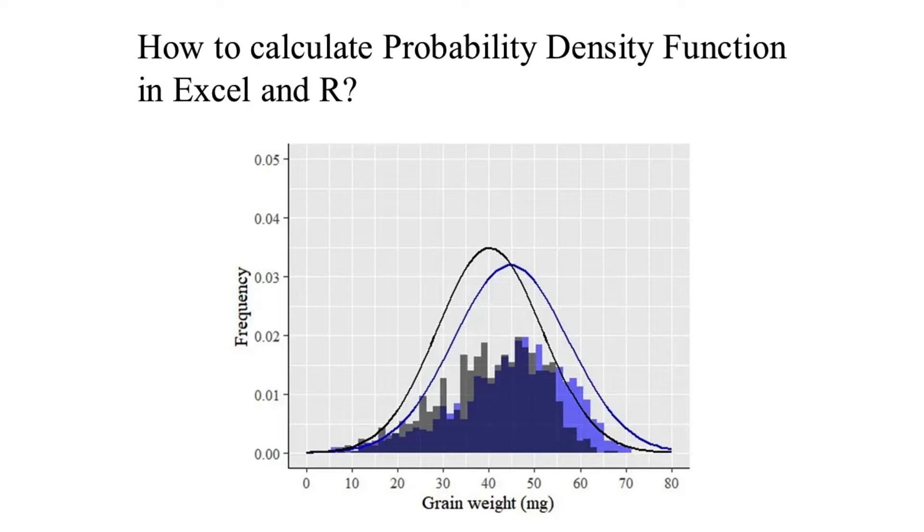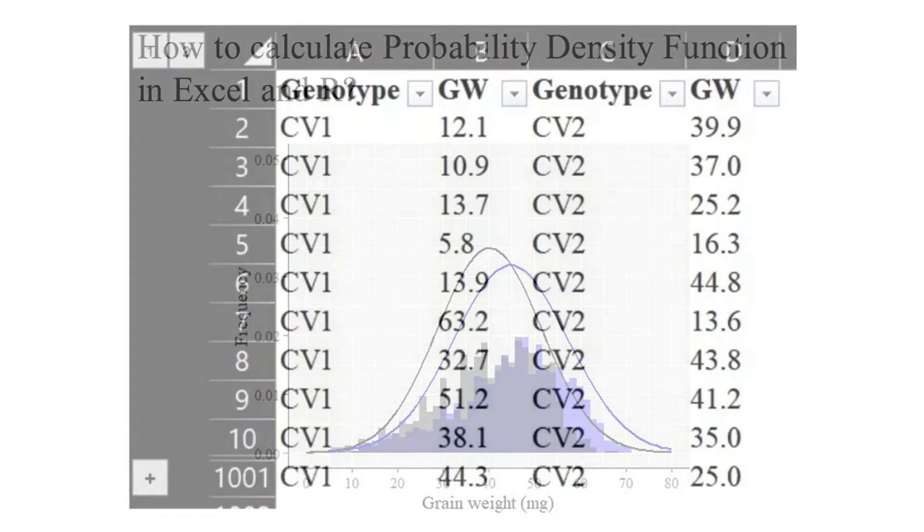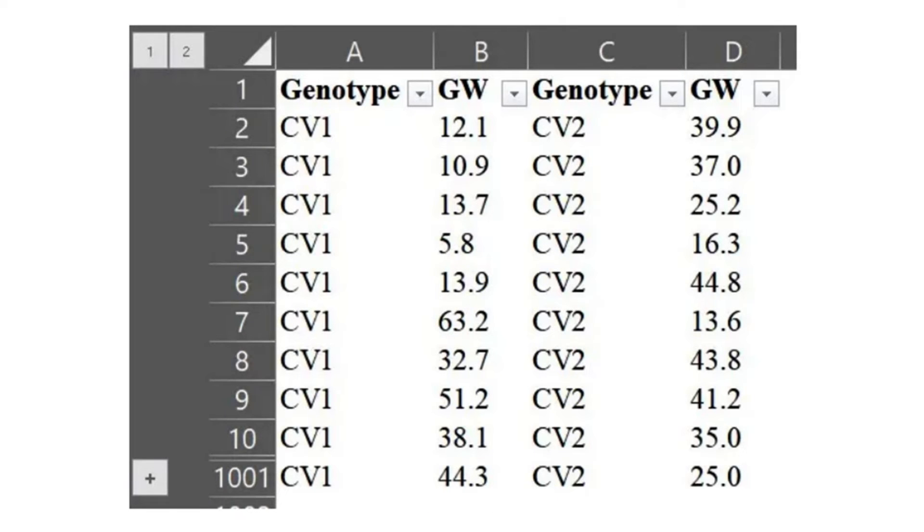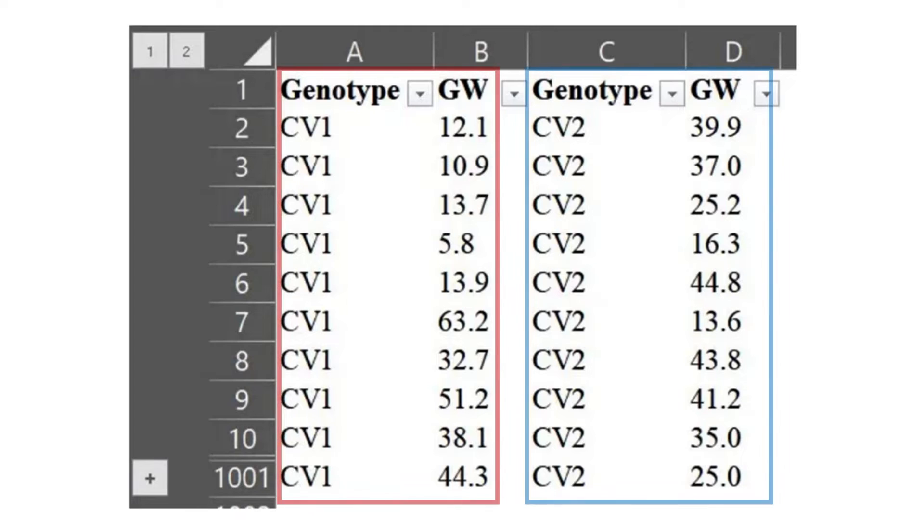Today I'll explain what is probability density function (PDF) and how we can calculate it in Excel and also in R. Here is one data: I measured 1000 individual wheat grain weights of CV1 and CV2 genotypes.